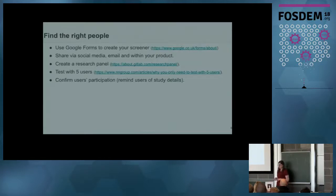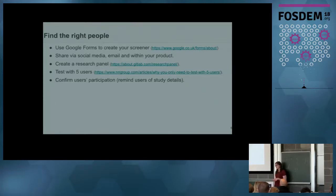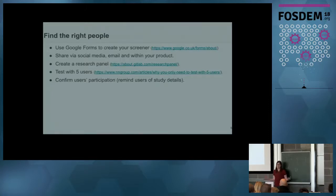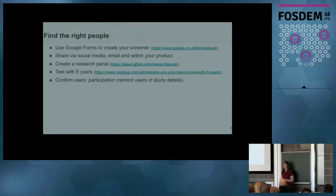Once you've written your screener, get it into Google Forms and share it via the appropriate means. At GitLab, to speed up the recruitment process, we created a research panel consisting of 2,000 users who have opted in to receive research studies from us. We email the screener out and tend to get a good response rate very quickly. If you're thinking about conducting regular usability testing, I'd recommend a research panel. You only need to test with 5 users — there's lots of research and evidence for this, and it reveals 85% of usability problems. And finally, just confirm your users' participation.